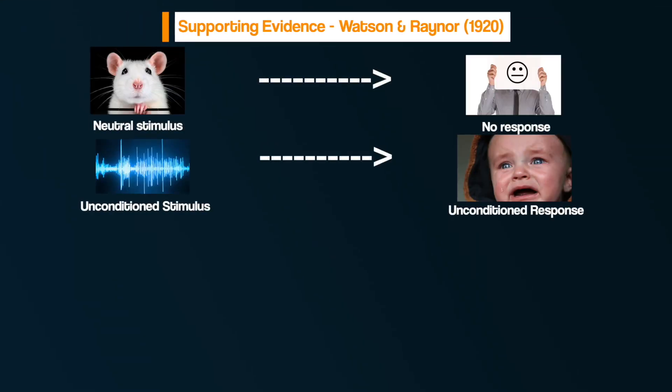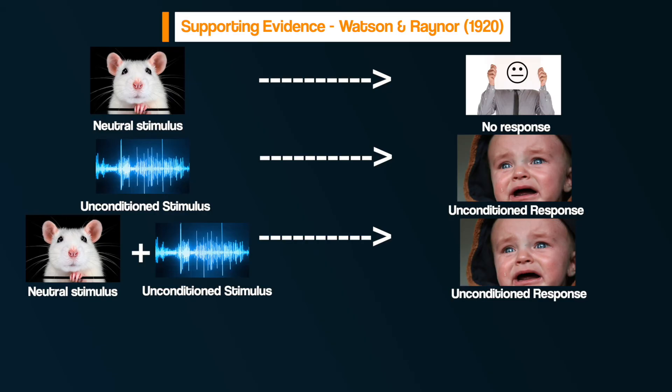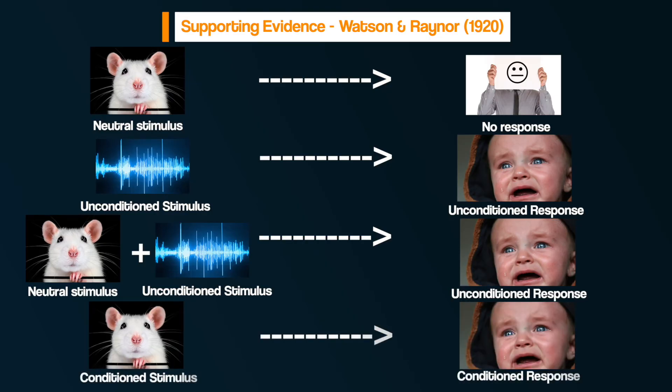Here we can see how a neutral stimulus — the white rat — was paired with an unconditioned stimulus — a loud noise — which eventually led to the white rat becoming a conditioned stimulus. When it was presented on its own, it led to a fear response. You may have been thinking, as we explored the behavioural explanation of phobias, that if this is how people develop phobias, can we not use the same idea to treat phobias? And yes, we can.